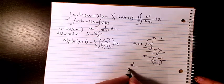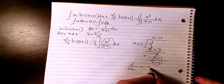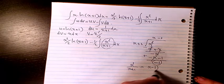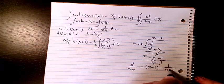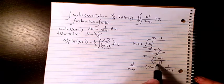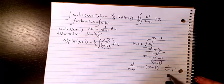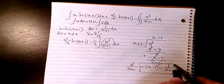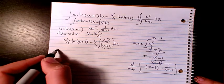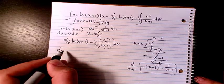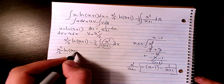So x squared divided by (x+1) equals x minus 1 minus 1 over (x+1). I'll write that back in: we have x squared over 2 times ln(x+1), minus 1/2 times the integral of x minus 1 dx, minus the integral of 1 over (x+1) dx.